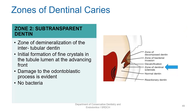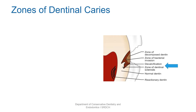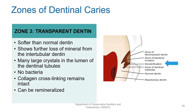The second zone is the zone of dentinal sclerosis or sub-transparent dentin. In this case, there is some demineralization of intertubular dentin happening. There is initial formation of fine crystals which can be seen in the tubule lumen. The collagen cross-linking is intact and there are no bacteria present in this zone.